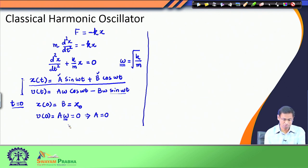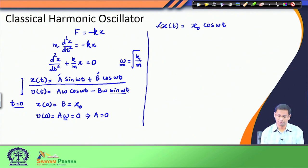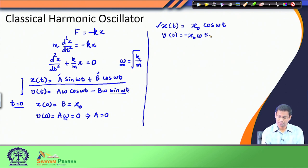Using this knowledge, x(t) is defined as: a is 0, so that term vanishes, and b is x₀. Therefore x(t) = x₀·cos(ωt). This is the general expression for position of a classical harmonic oscillator. The velocity at any time t: since a = 0, that term vanishes, leaving v(t) = −x₀·ω·sin(ωt).